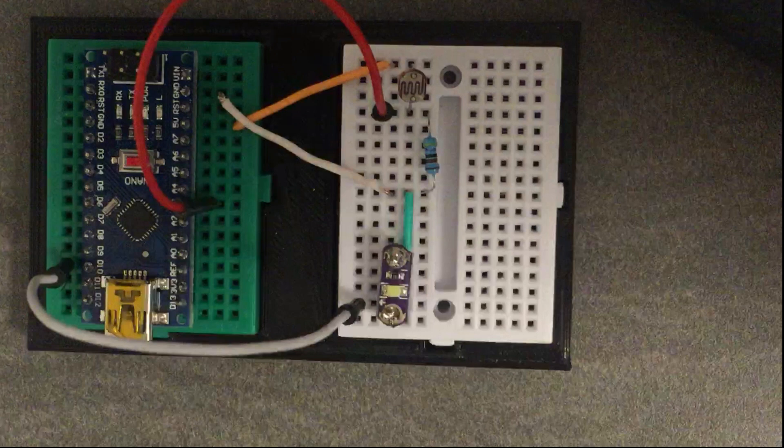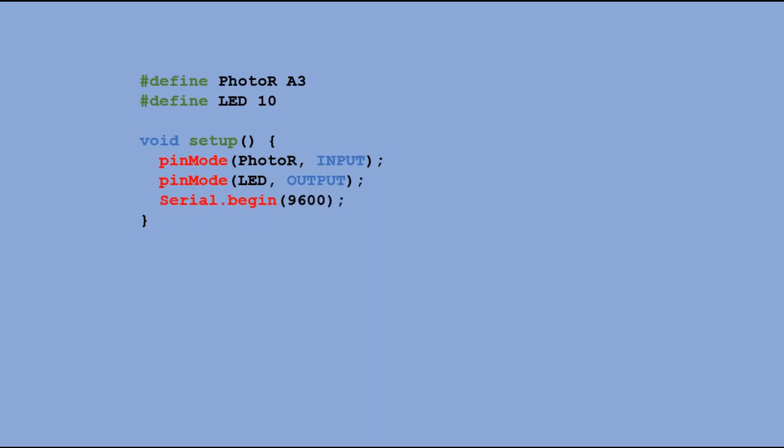we can write a simple code to control the LED with a reading from the photoresistor. First, we declare both LDR and LED pins. In the setup function, we declare the LDR pin as input and LED pin as output. We also open the serial monitor so we can see the values read from the photoresistor.